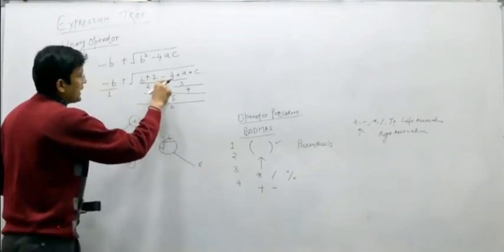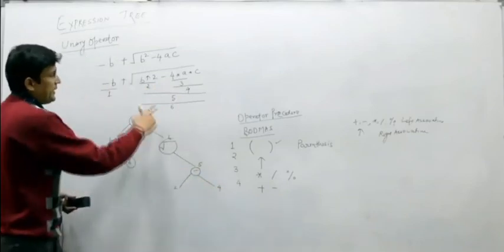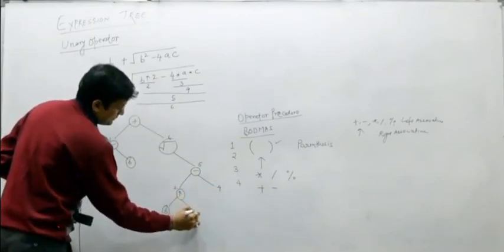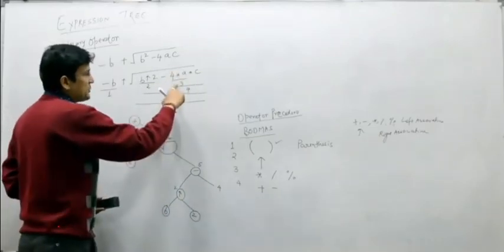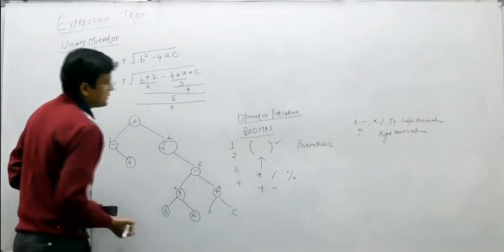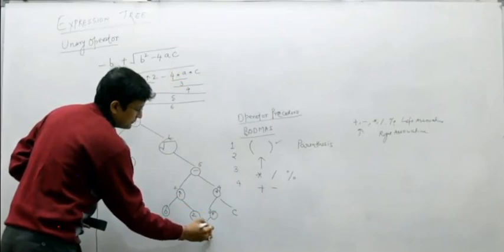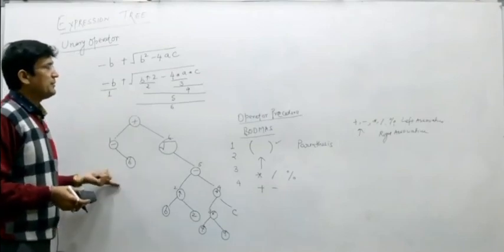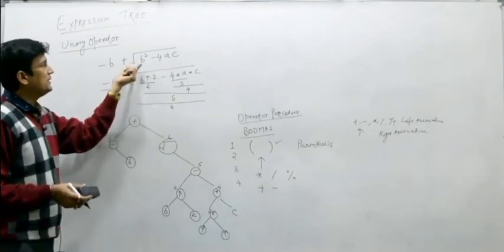Sub-expression 5 is sub-expression 2 minus sub-expression 4, so minus has sub-expression 2 on the left and sub-expression 4 on the right. Expanding sub-expression 2 gives B raised to the power 2. Expanding sub-expression 4 gives 4 multiplied by A multiplied by C, which is sub-expression 3 on the left and C on the right, where sub-expression 3 is 4 multiplied by A. This completes the expression tree containing both unary and binary operators.